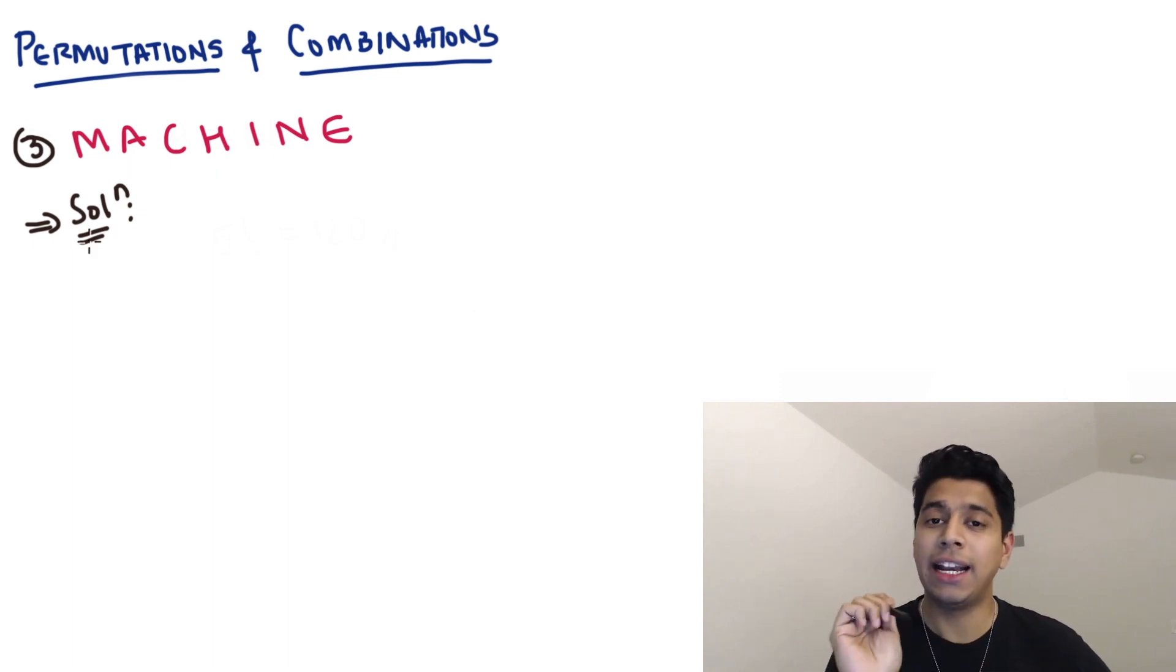Now when checking for duplicates, I'd encourage you to check one letter at a time because there have been cases where I've missed like two A's or two E's. So go one letter at a time and just check the entire word if there's any duplicate. So 1M, 1A, 1C, 1H, 1I, 1N, 1E. So they're all unique and there are seven of them.